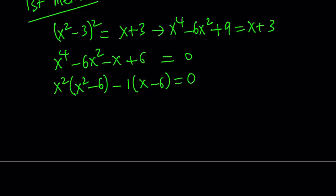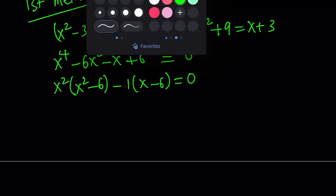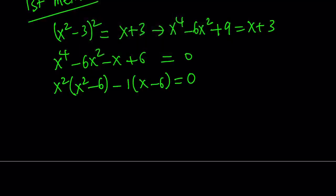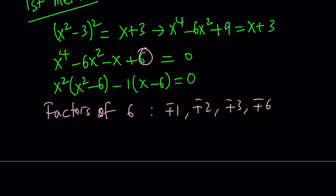Okay, then you could use the quartic formula. Good luck with that. Or maybe use the rational root theorem. So how do we use the rational root theorem? We look for factors of 6, the constant term. Factors of 6: plus minus 1, plus minus 2, plus minus 3, plus minus 6. We have 8 candidates.